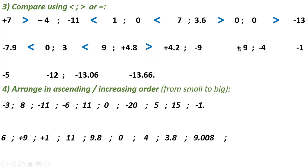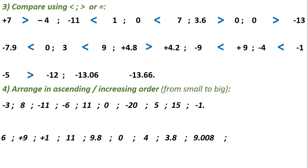Minus 9 and plus 9: all negative numbers are less than all positive numbers. Minus 4 and minus 1: when comparing two negative numbers, as you go further from zero the number becomes smaller, so minus 4 is less than minus 1. Minus 5 is nearer to zero, so it is greater than minus 12.